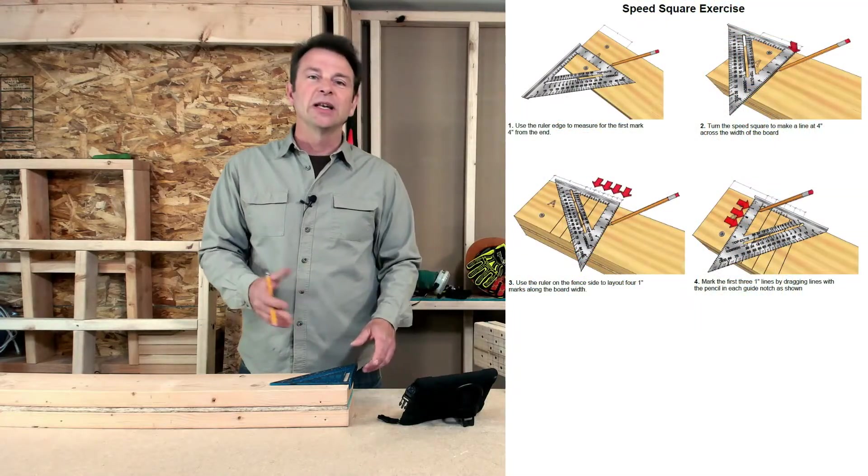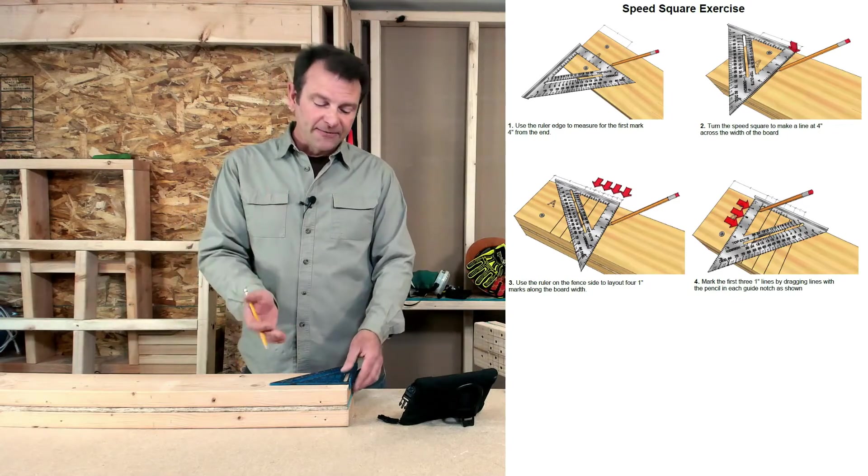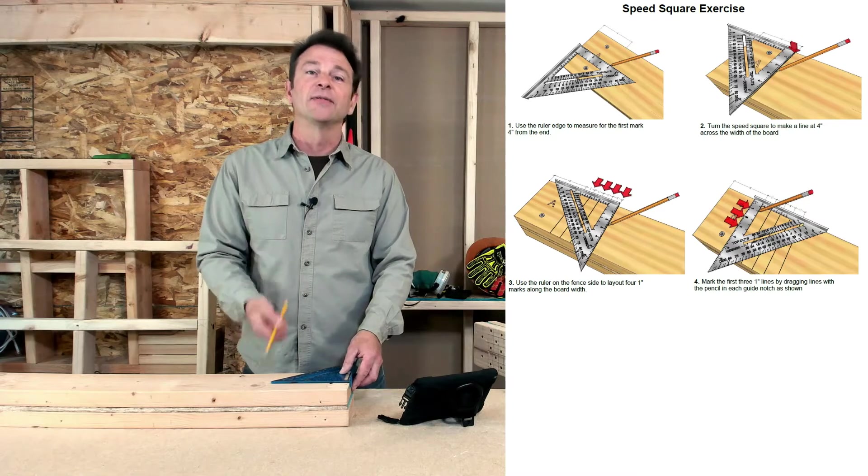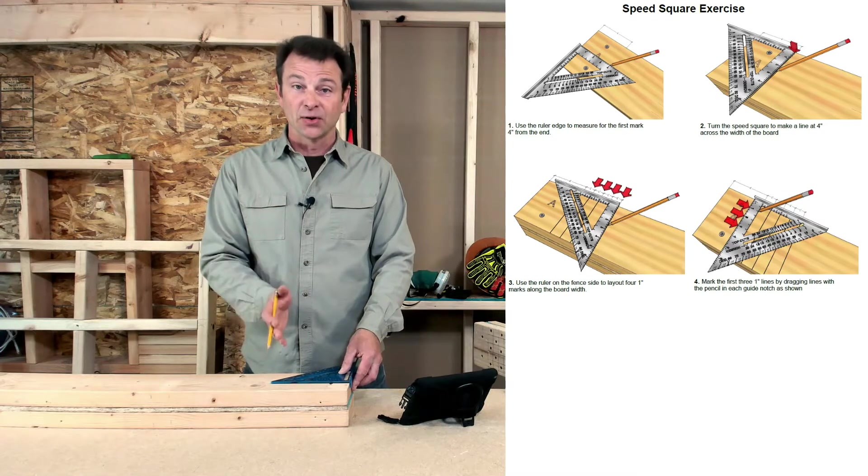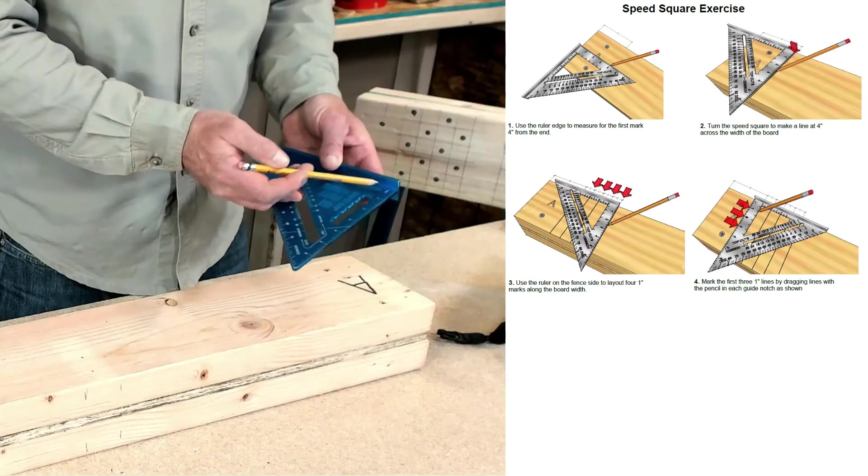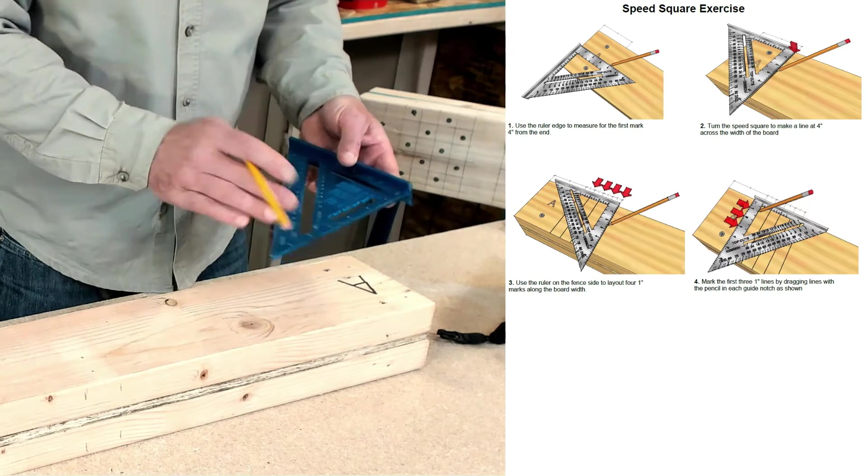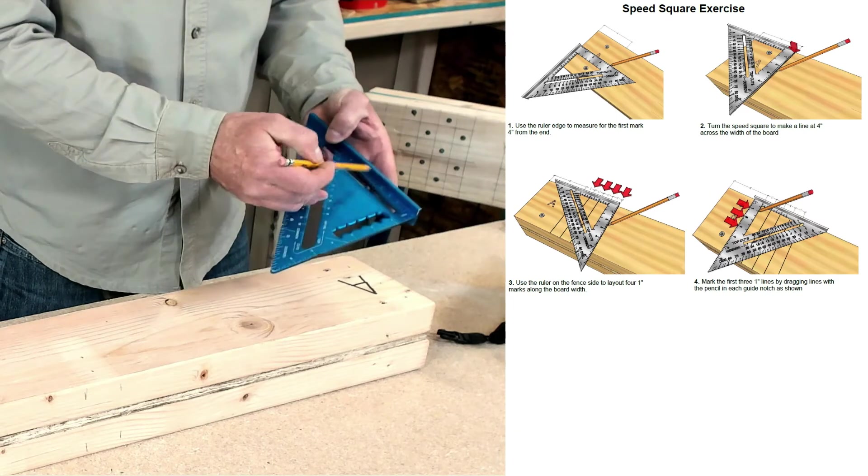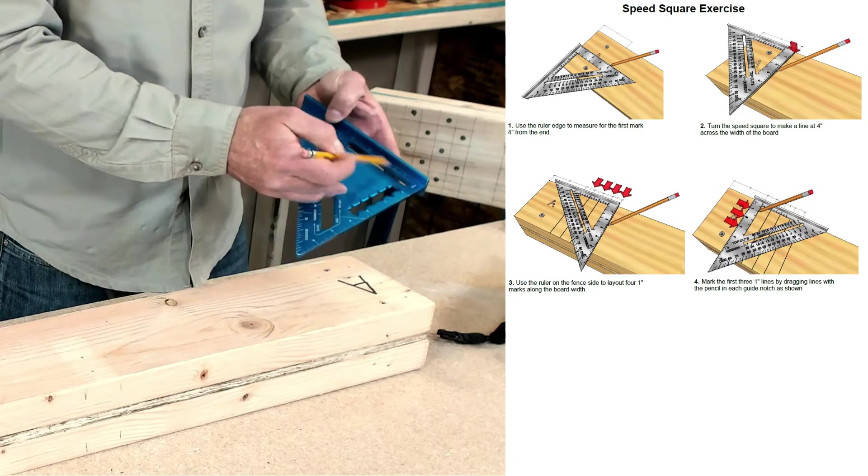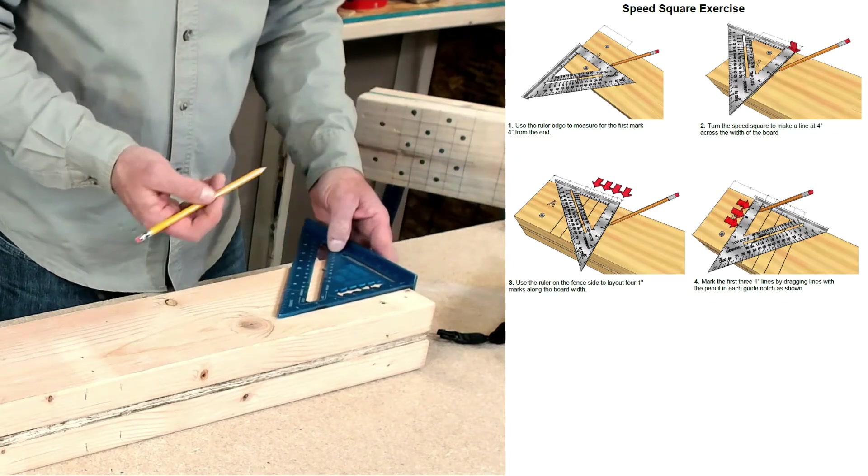So the first thing we need to do is we're going to start from one end, work all the way down, and we need to be four inches off of the end of this board with our first grid square. So the easiest way to do that, if you remember on your speed square, you have two rulers available to you. One that goes from the fence out on the ruler side. I also have a ruler inside here along the fence that I'm going to use to get through some of this exercise.